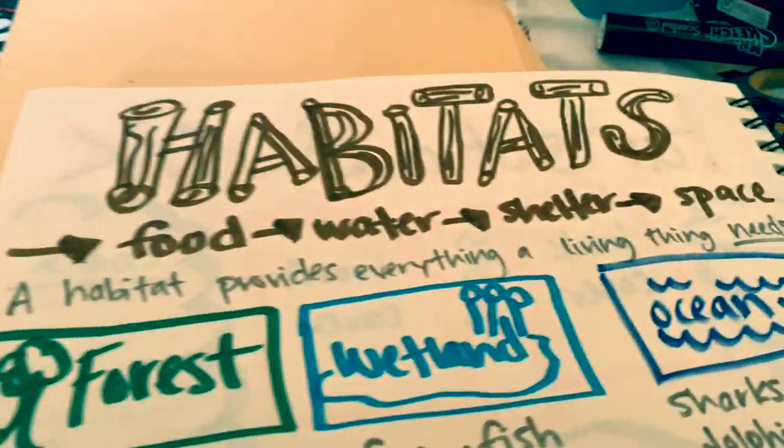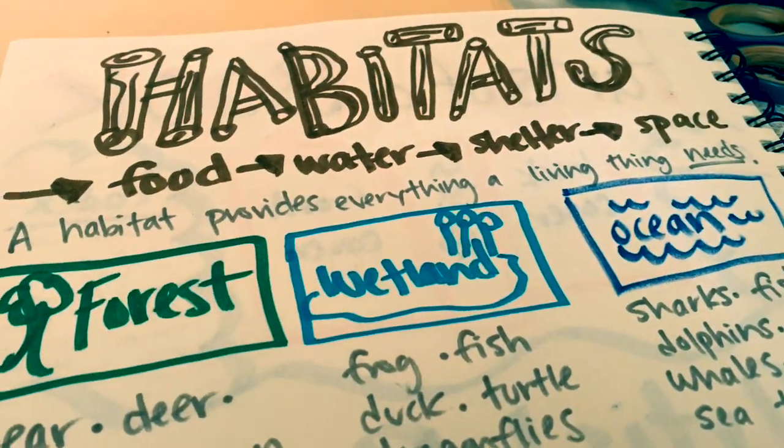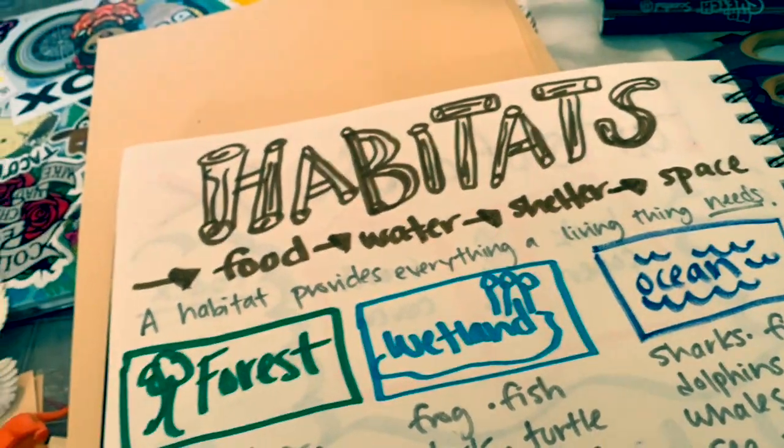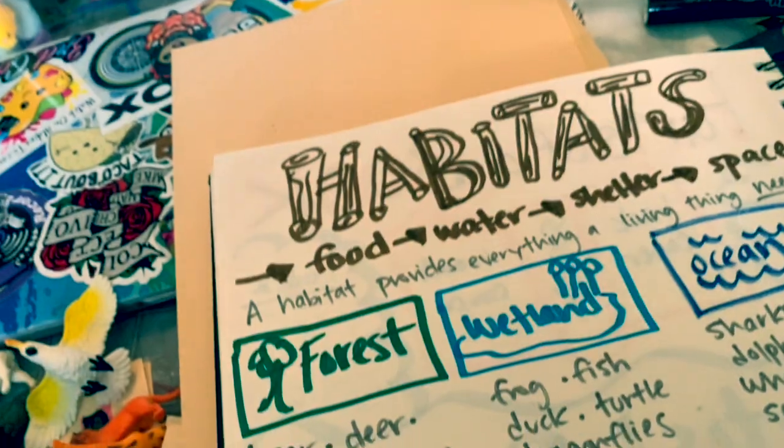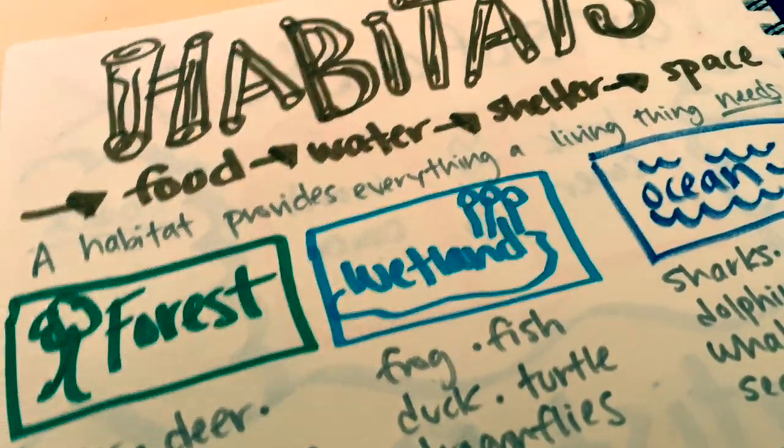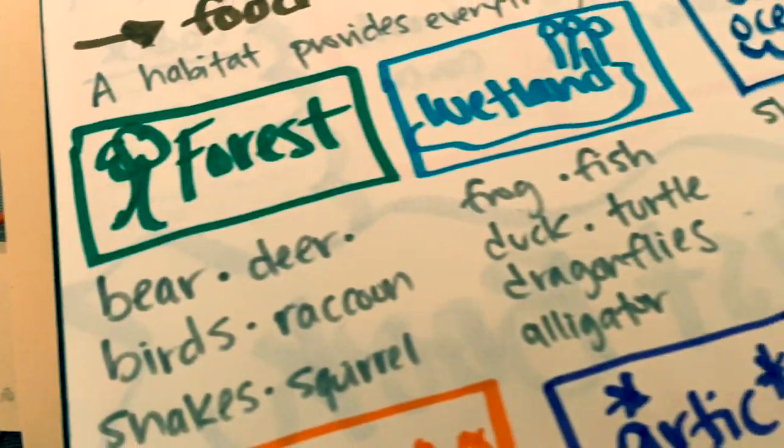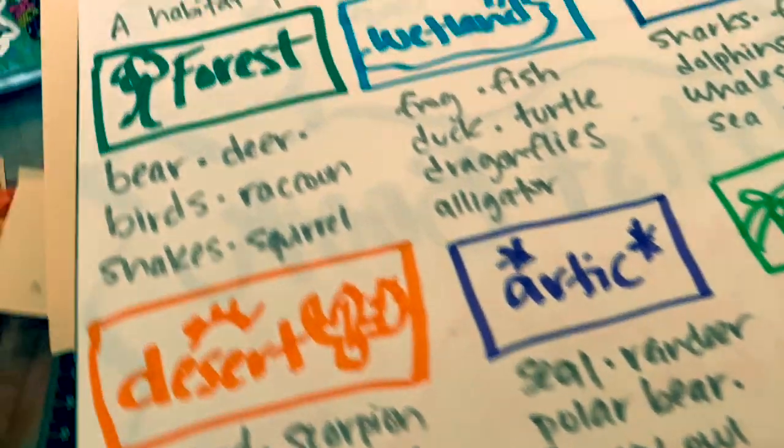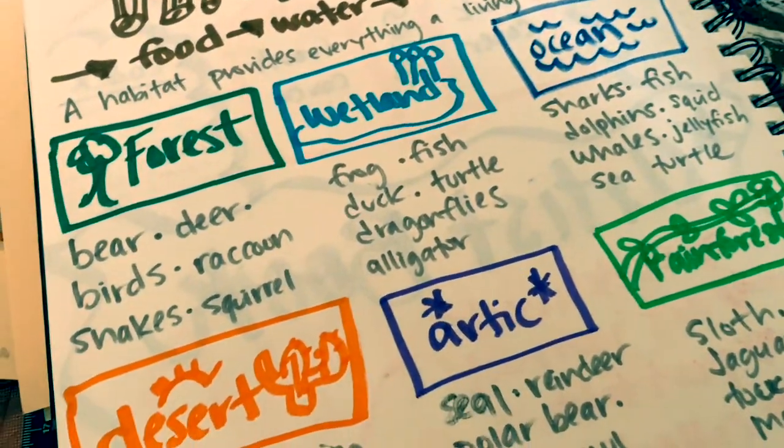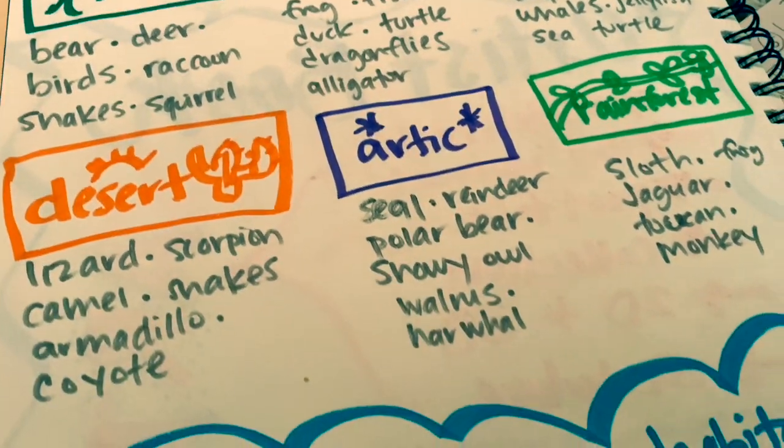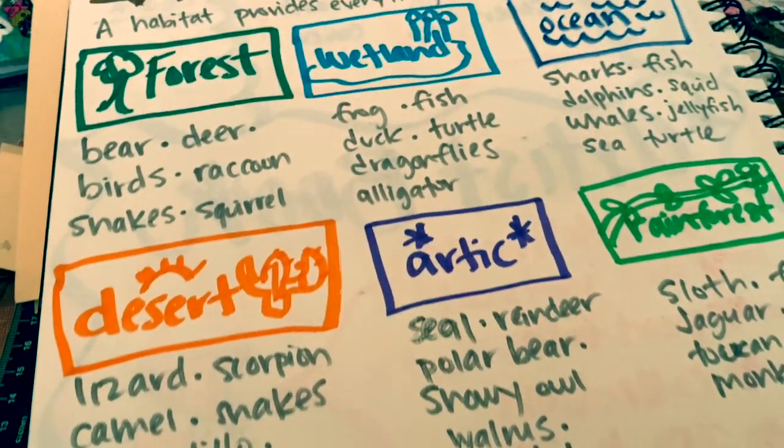A habitat is where an animal lives and the habitat has food, water, shelter, space—everything that the animal needs in order to survive. Different kinds of habitats are forests, wetlands, oceans, desert, arctic, and the rainforest. So you're going to choose an animal where you're going to create the animal and their habitat.